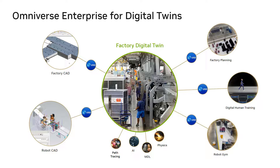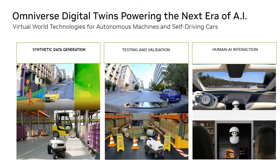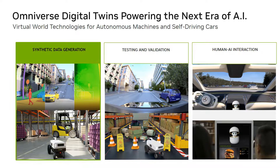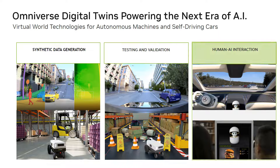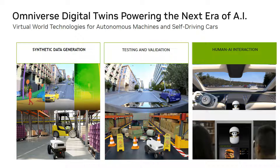There are three categories for NVIDIA digital twin enabling technologies. Synthetic data generation aids in supplying more data to feed robotics and drive simulations using applications like Omniverse Replicator, DriveSim, or Isaac Sim. Testing and validation of your digital twin uses NVIDIA DriveSim and NVIDIA Isaac Sim. Human-AI interaction leverages Omniverse Avatar, Drive Concierge, and Project Tokyo. These technologies bring virtual worlds to autonomous machines and self-driving vehicles.